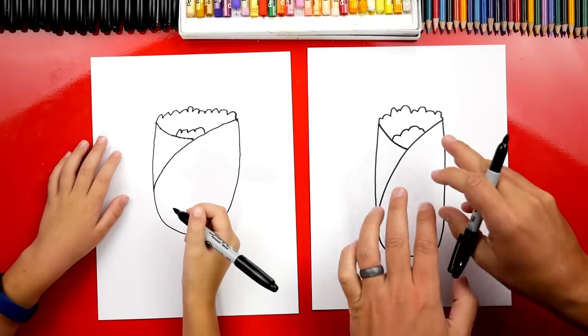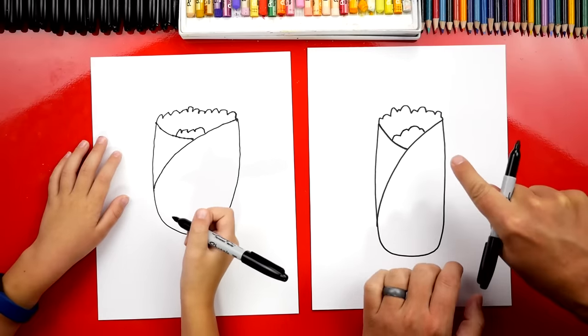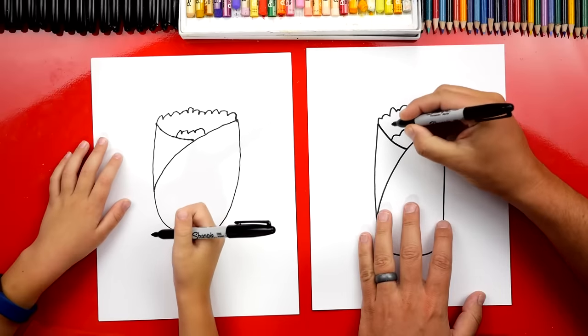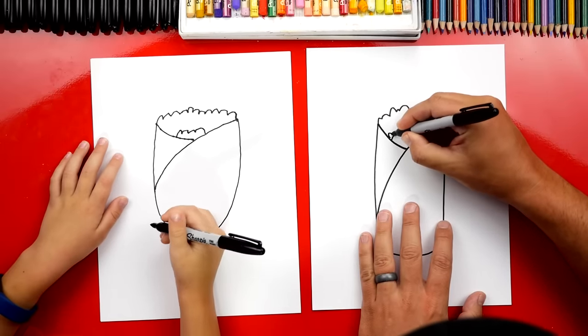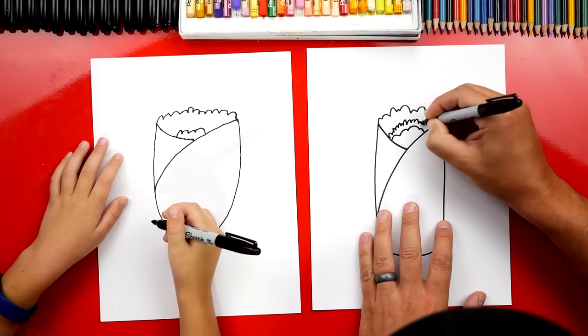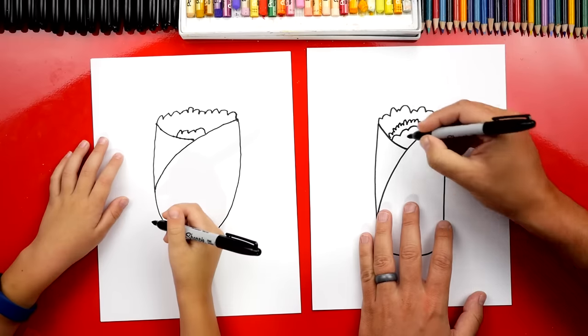Now, our friends at home, you guys can add whatever you want to the burrito. You don't have to add the same things we're adding. Let's add some rice. Should we add rice? I'm going to add little bumps like this, very small bumps for the rice.